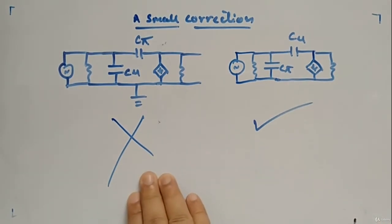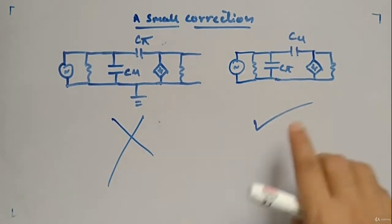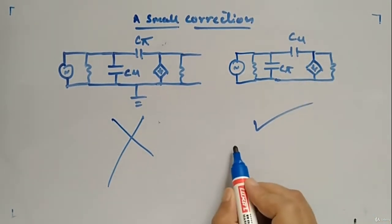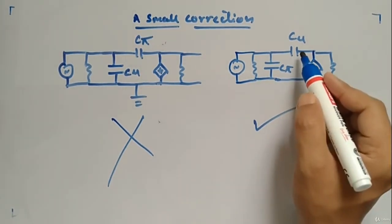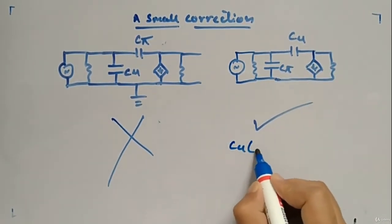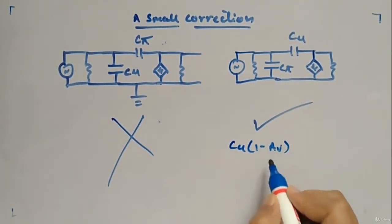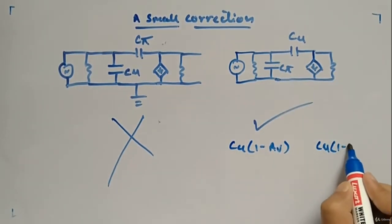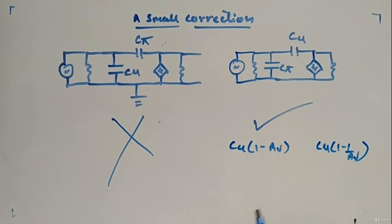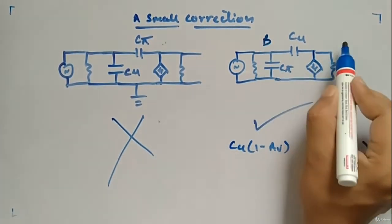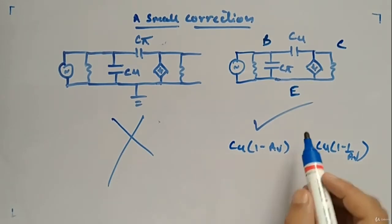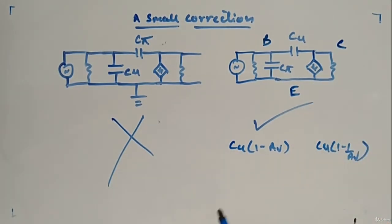So whatever analysis we have done — if you apply Miller's theorem — then Cmu times (1 minus Av) appears between base and emitter, and Cmu times (1 minus 1/Av) appears between base and collector. That's the small correction I wanted to make.